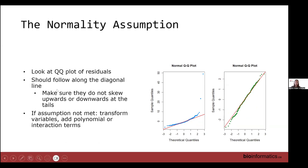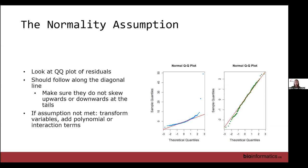The normality assumption is also checked using model residuals after fitting, most commonly with a QQ plot. The plot will display a red diagonal line, and we want to see the points follow along that line. The plot on the right shows data mostly following the red line — normally distributed — whereas the plot on the left skews upward toward the end, indicating a transformation might be required, or we may need to add more variables or polynomial terms.